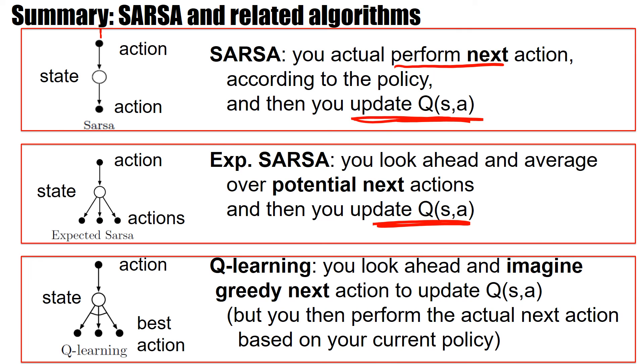And in Q-learning, you look ahead and imagine a greedy next action. And then you update Q(s, a). But just remember, the actual next action is based on your current policy. And that's why Q-learning is called an off policy algorithm.